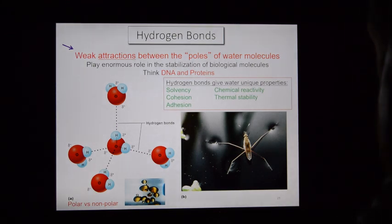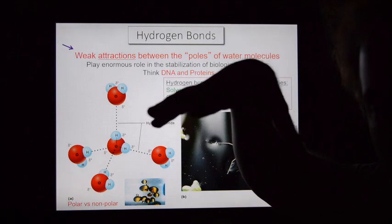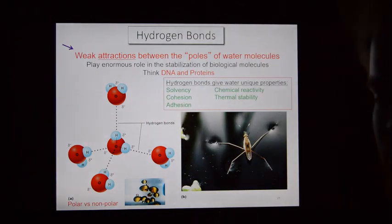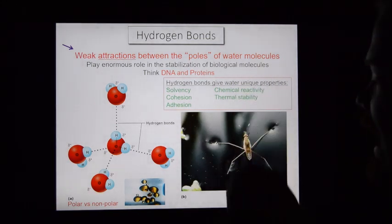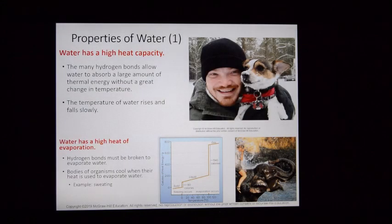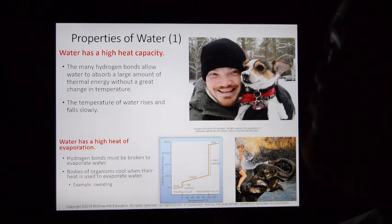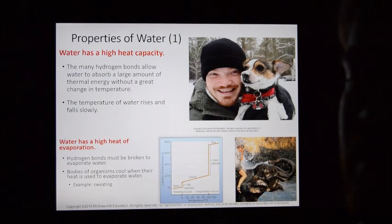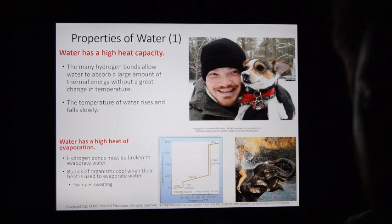Hydrogen bonds appear all over the place in the human system and in other living things. Your DNA forms its double helix held together with hydrogen bonds — weak attractions between molecules. Proteins in your system, like your skin, are in unique shapes maintained by hydrogen bonds. Hydrogen bonds drive our whole system. Because you're mostly made of water, and water is polar covalently bonded and capable of hydrogen bonding, this gives you unique characteristics.